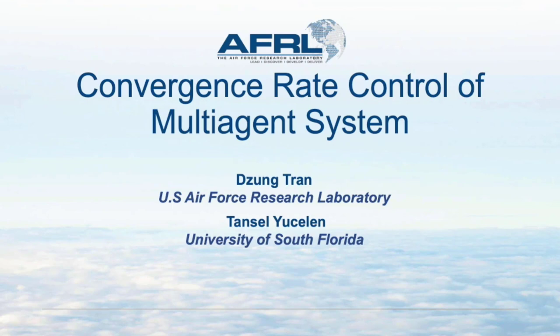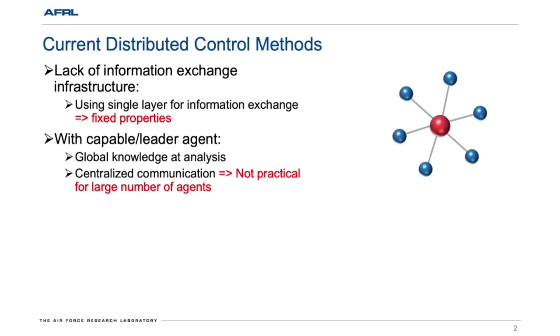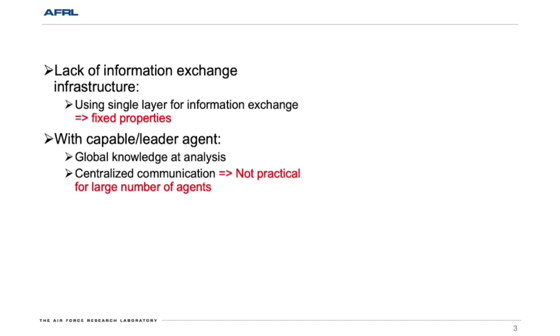Hello, my name is Yang Chen. I'm currently a research associate at AFRL. Today, I'm going to introduce to you our research, Convergence Rate Control of Multi-Agent Systems. This work with John worked with Dr. Tansu Alpcan from the University of South Florida. We recognize that current distributed control methods seem to lack information exchange infrastructure. More specifically, most algorithms only use a single layer for information exchange, which is inflexible with fixed properties. Some papers address this problem by assuming that some information are globally known, or centralized communications, where one agent can have the capability to communicate with all agents in the network. However, this is not practical for a large agent team. With Multiplex Information Networks, the limitations will be addressed.